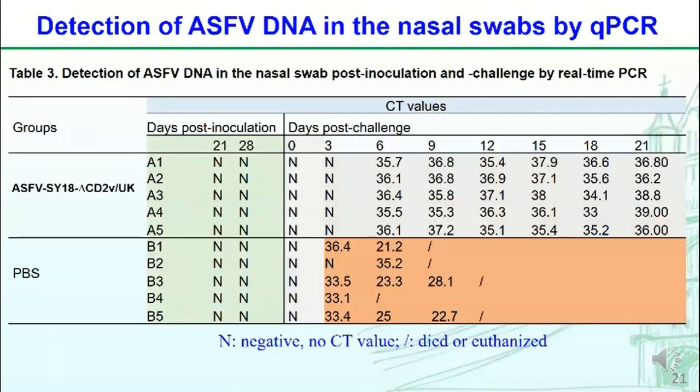Before challenge, no viral DNA was detected from nasal swabs of all pigs. After challenge, low-level copies of viral DNA were detected from the mutant virus-immunized pigs. In contrast, high-level copies of viral DNA were detected in the control pigs.